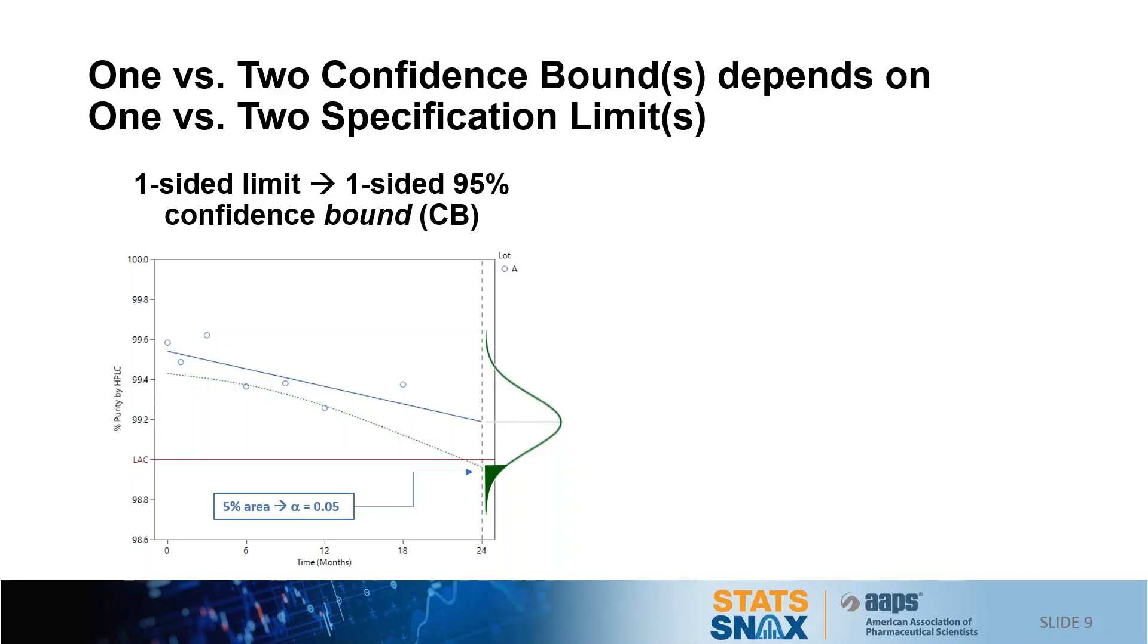The choice between a one-sided 95% confidence bound or a two-sided 95% confidence interval has to do with which possible values of the mean I'm interested in. This translates to where the area under the curve is allocated during the confidence bound estimation.